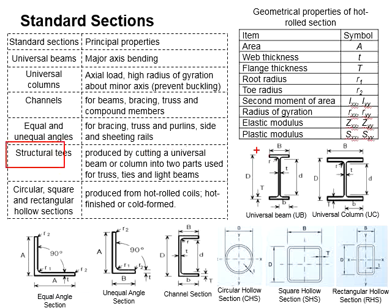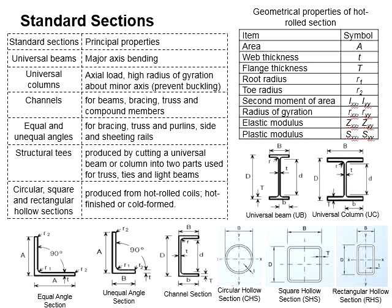Structural T sections are produced by cutting universal beams or columns into two parts, which forms the T shape of the section. They are normally used for truss, tie, and also light beams.